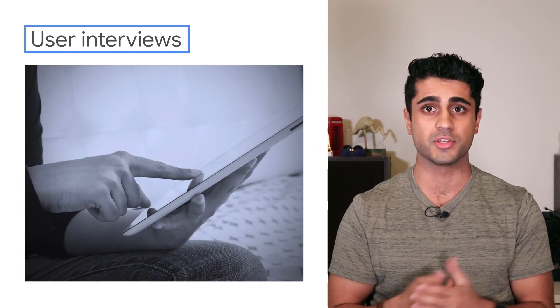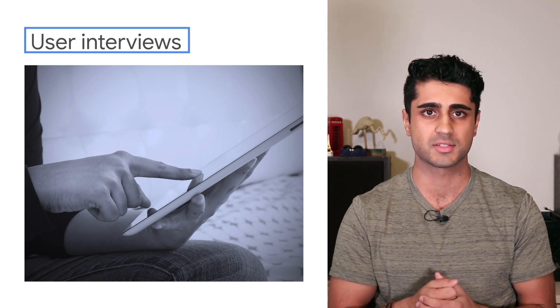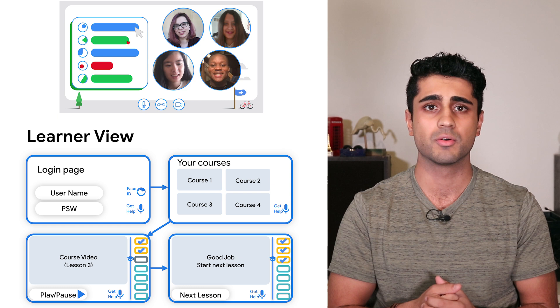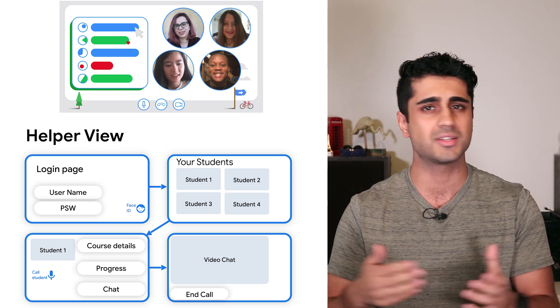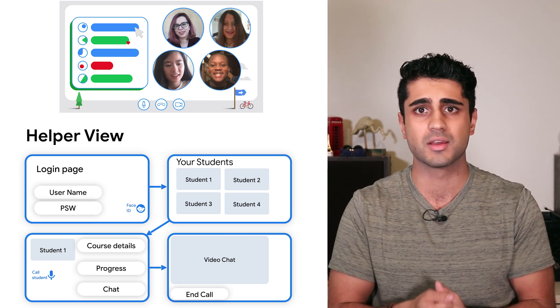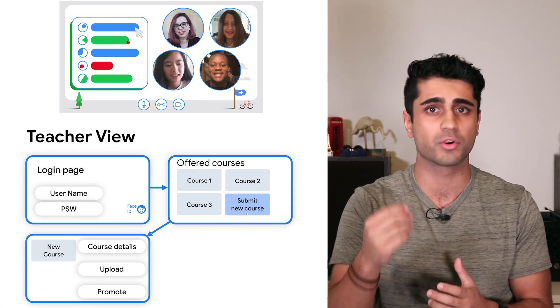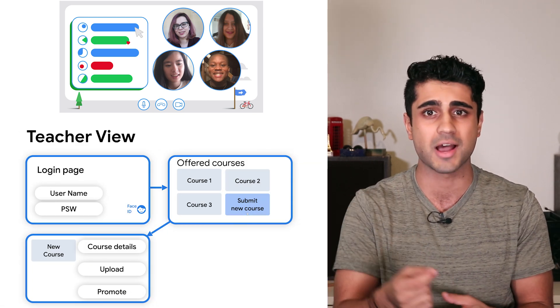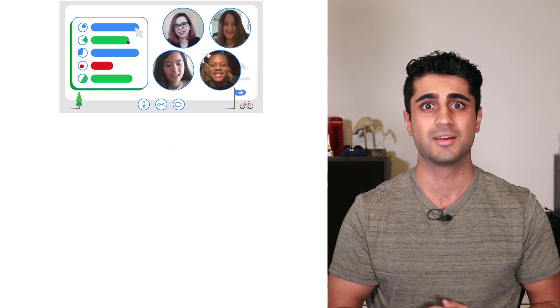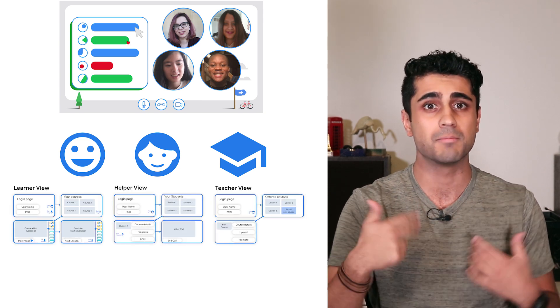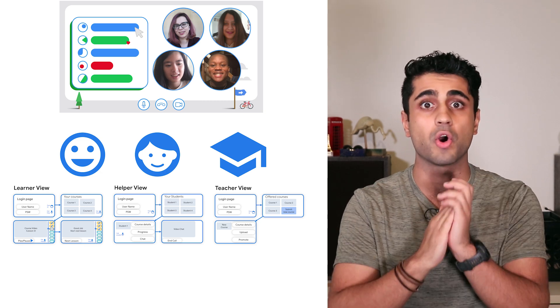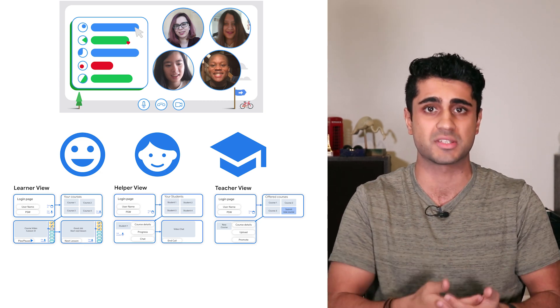Once we've confirmed it with some potential users, it's time to start designing the user interface. I'll offer to take the lead since I believe I'm good at UX and UI. We'll share designs and go through feedback and revisions — this stage can take a day or it can take a week. Don't rush to implement the solution before you're confident you've designed a workflow that solves the defined problem. In our design, there are three user types: the learner, the helper, and the teacher.